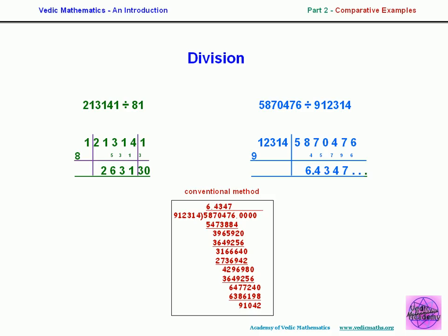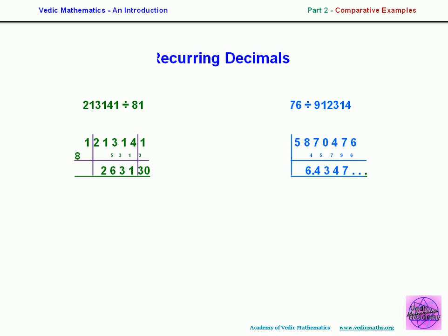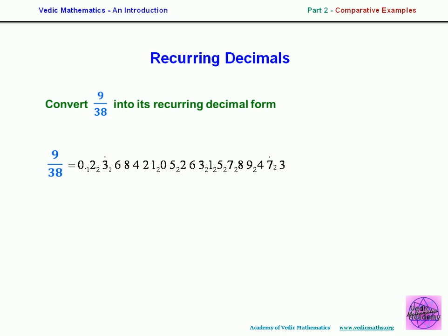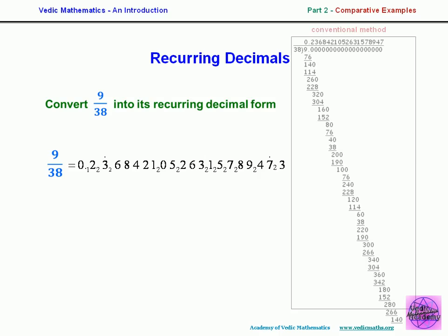Algebraic divisions can be handled the same way. For recurring decimals, to convert 9 over 38 into its recurring decimal form, the Vedic method gives the answer in one line by effectively dividing by 4. The conventional method requires dividing by 38 at each step.